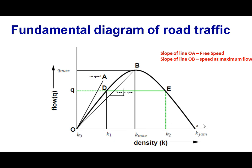This is the jam density. The portion on the left side of this vertical line is called stable flow, and the portion on the right side is called unstable flow.